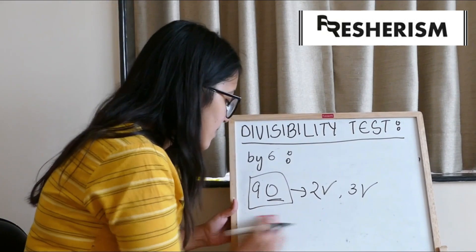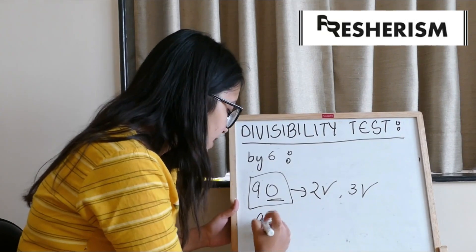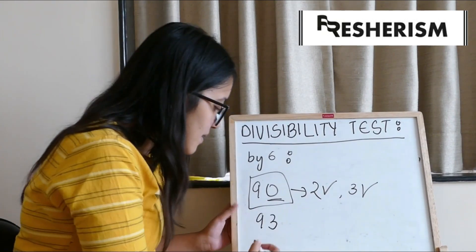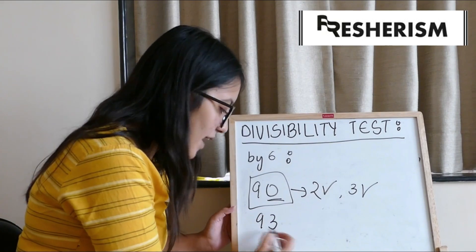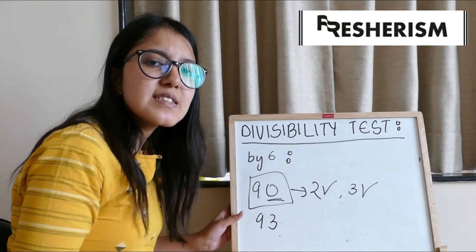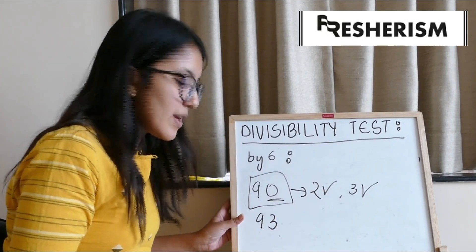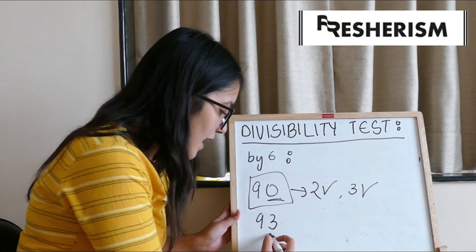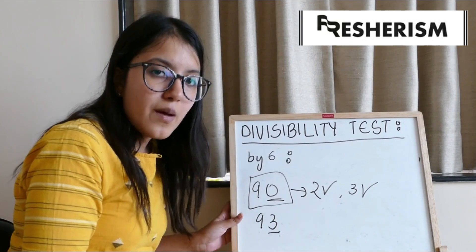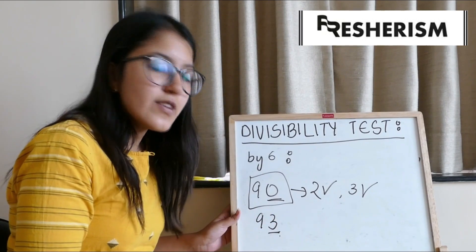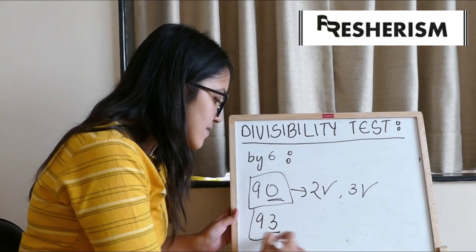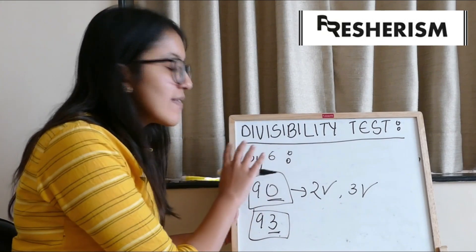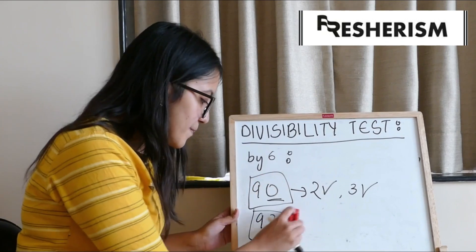Let us take another example: 93. For 3, it will be divisible because 9 plus 3 is 12, and 12 is divisible by 3. For 2, it won't be because at units place it has an odd number, not an even number. Hence, this is divisible by 3 but not by 2, and hence it will not be divisible by 6 as well.